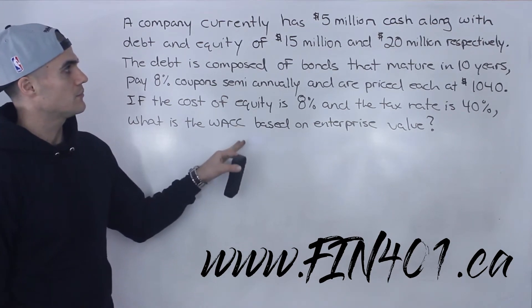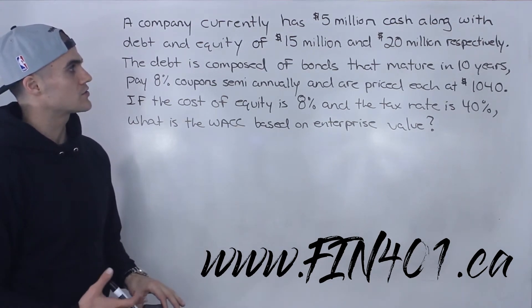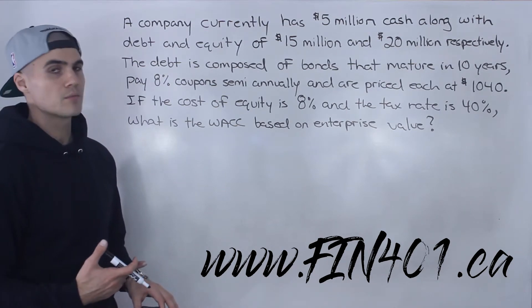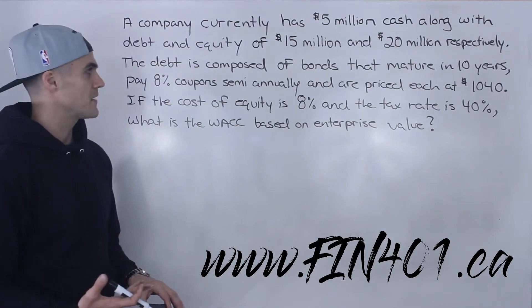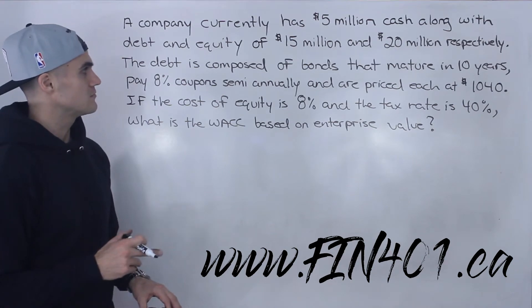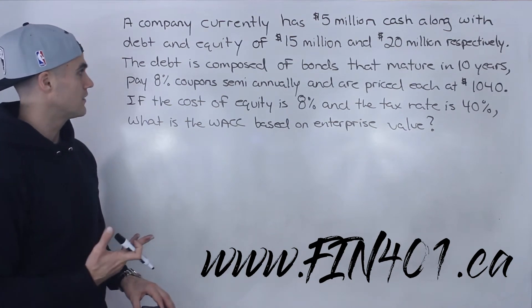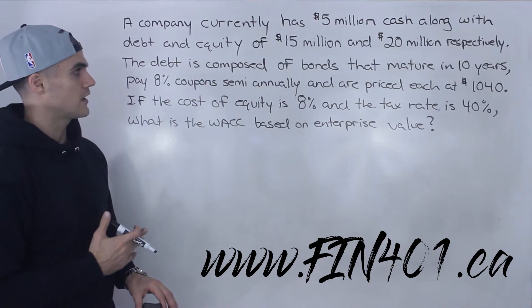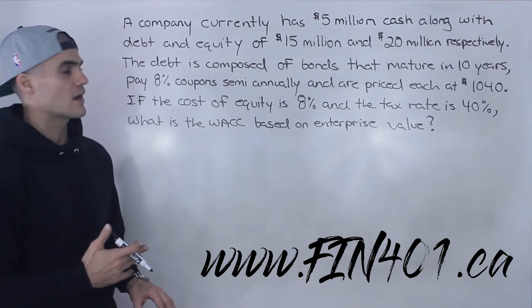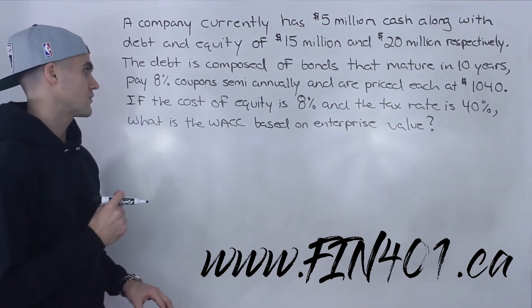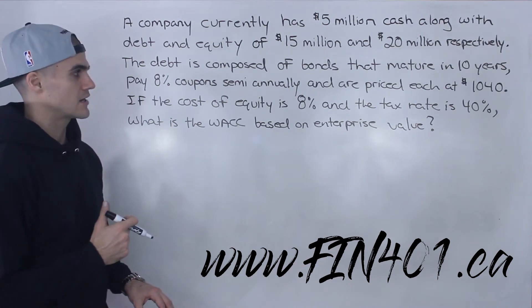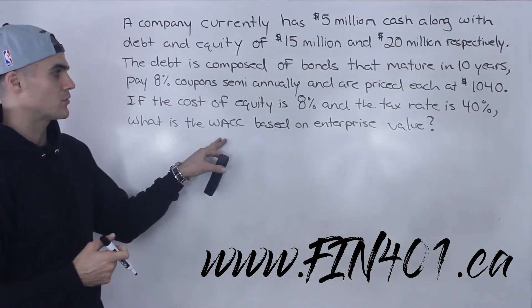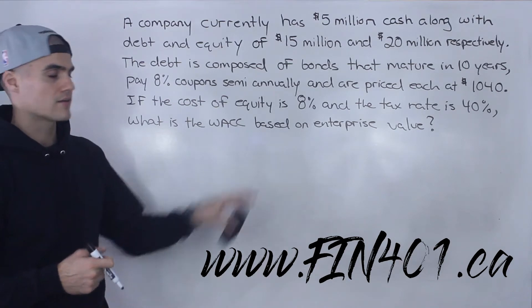A company currently has $5 million worth of cash along with debt and equity of $15 million and $20 million respectively. The debt is composed of bonds that mature in 10 years, pay 8% coupon semi-annually, and are priced each at $1,040. The cost of equity is 8% and the tax rate is 40%. What is the weighted average cost of capital based on enterprise value?